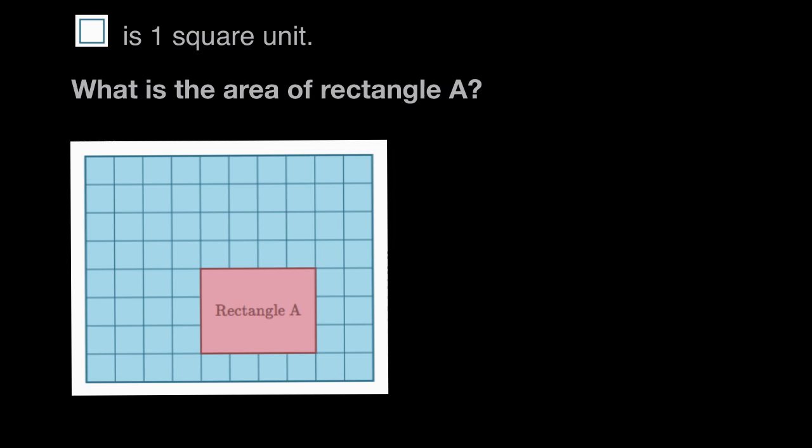This square is one square unit, so what is the area of rectangle A? The first thing we're told is that each of these little squares equals one square unit, and then we're asked to find the area of rectangle A.